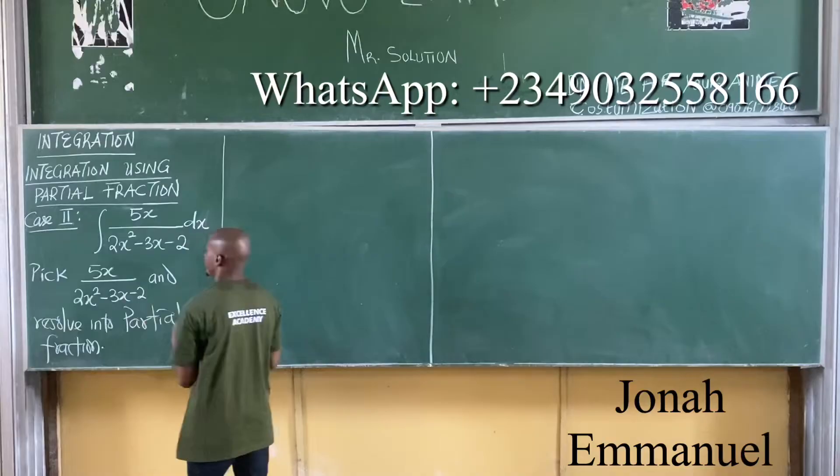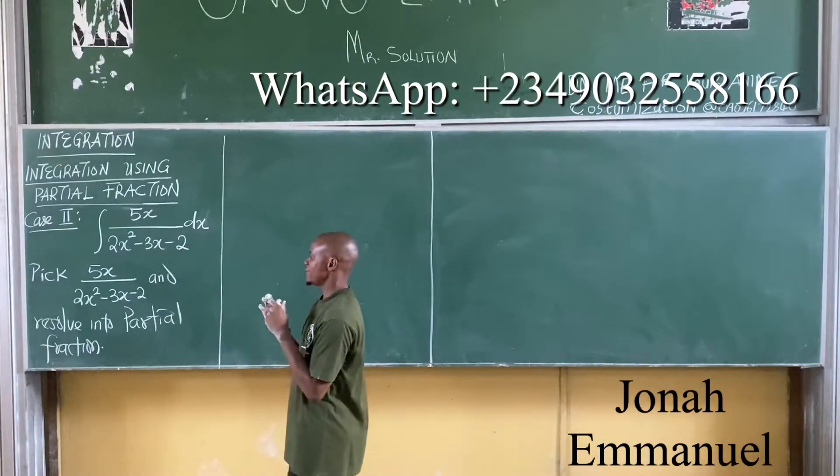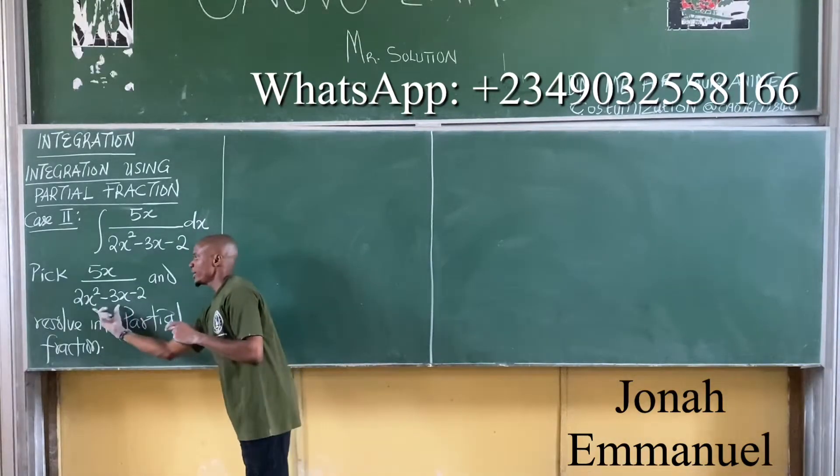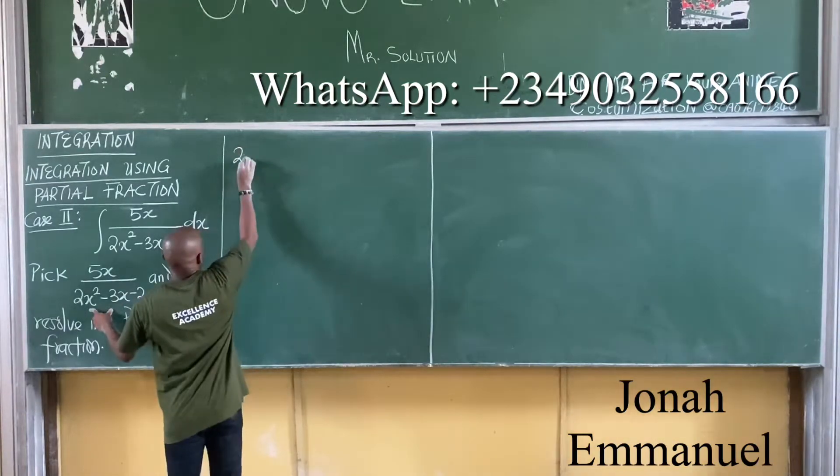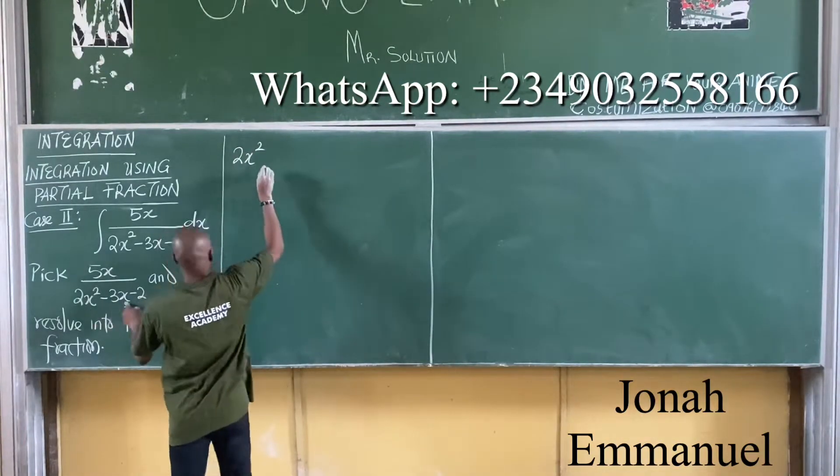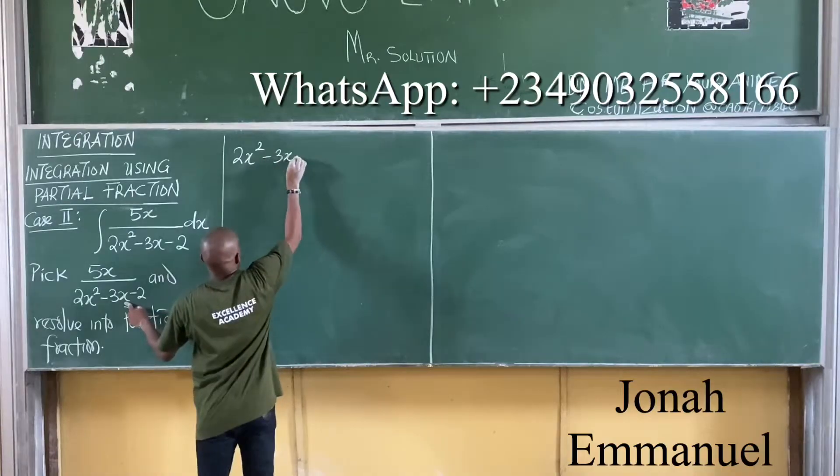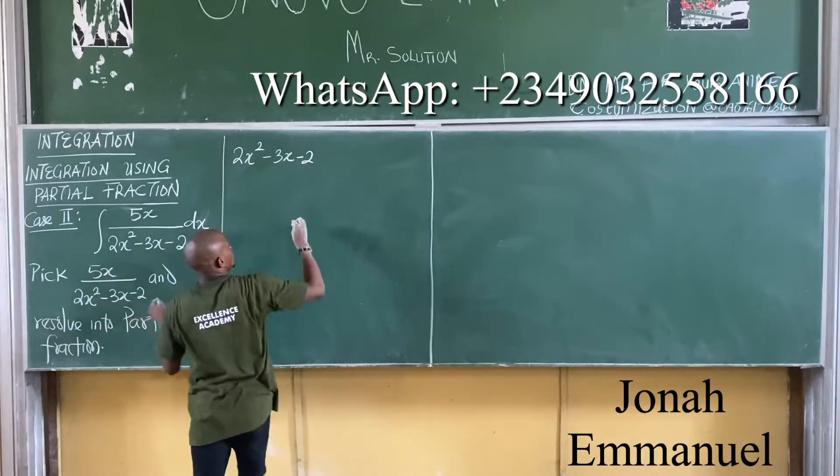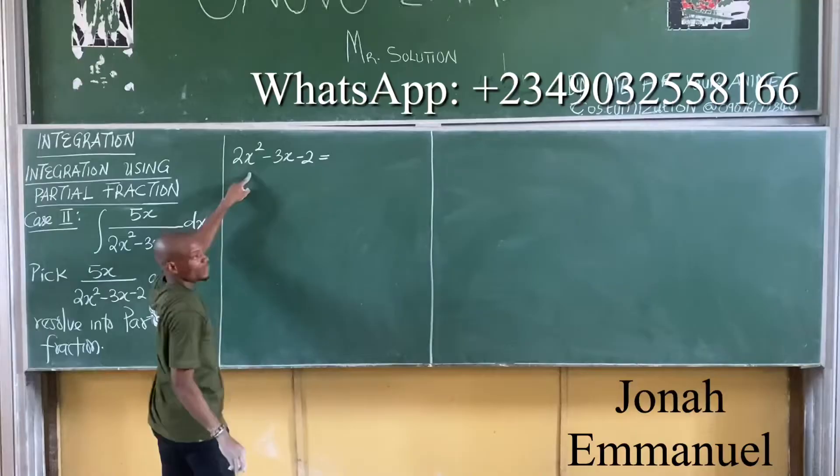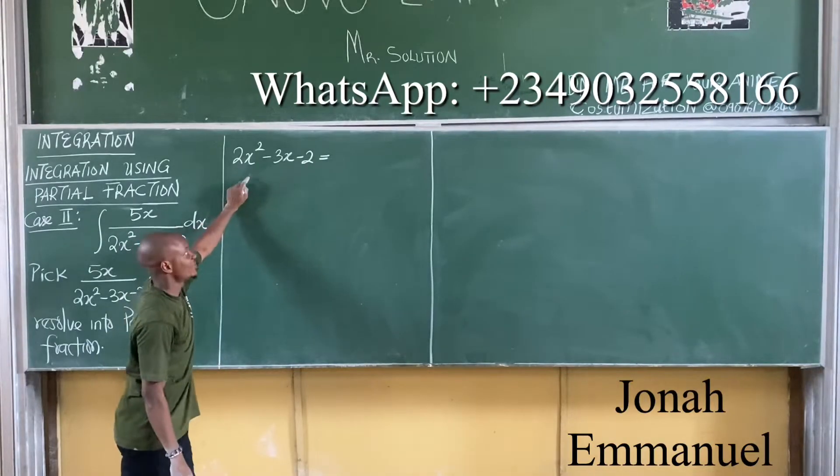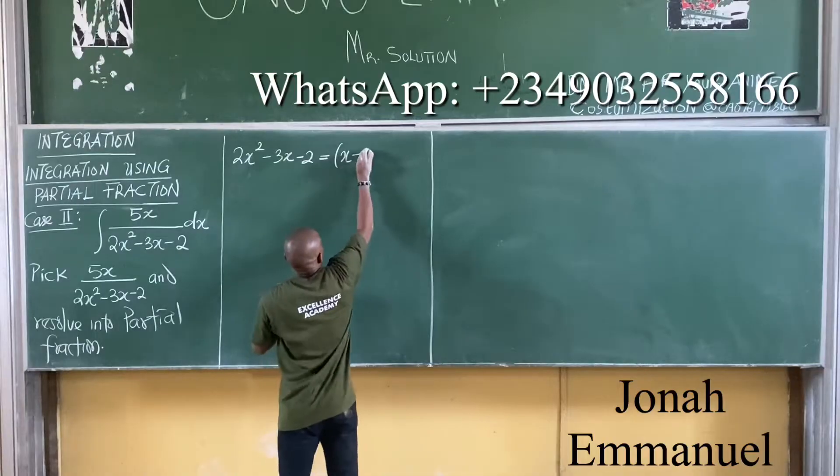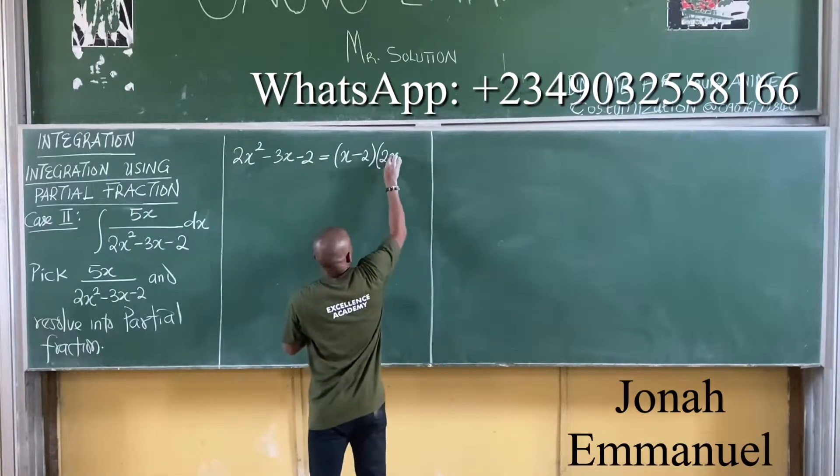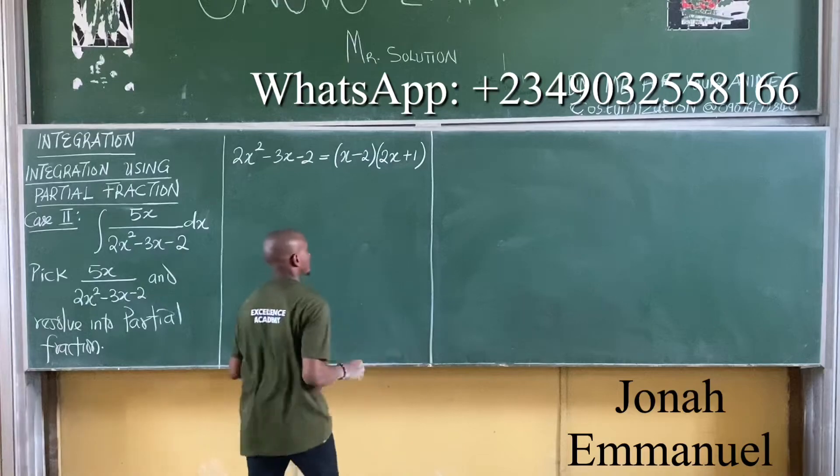For partial fraction our first task is to take this polynomial of your denominator which is 2x squared minus 3x minus 2. Resolve this. Of course this one here is quadratic. If I resolve this it gives you x minus 2, x minus 2, and 2x plus 1.